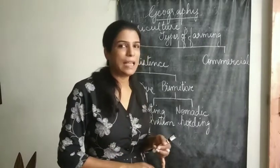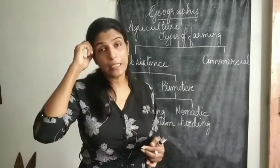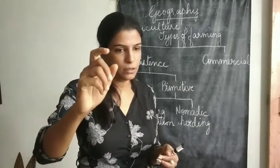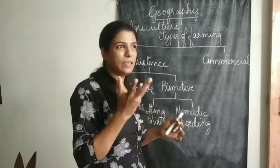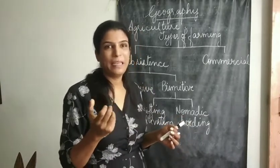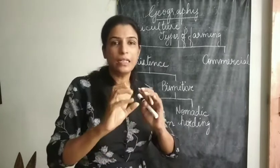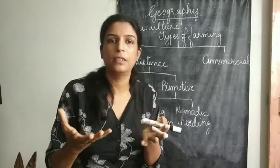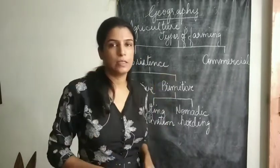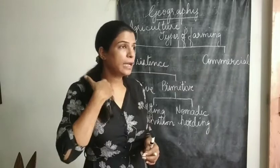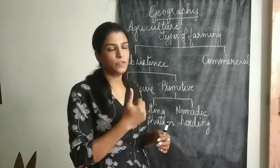You will find shifting cultivation in the Amazon basin and also in northeast India. The main crops grown here are maize, yam — which is a root vegetable that grows underground and is large in size — and cassava. These are the food items grown with the help of shifting cultivation.